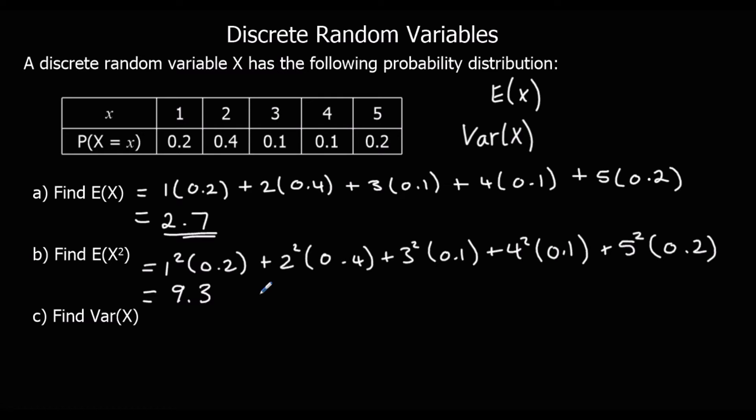And now, Var(X) is E(X squared) minus E(X) squared. So E(X squared), 9.3, minus E(X), 2.7 squared. So we can say that's E(X squared) minus E(X) squared. It's the square of the mean. Note, the mean of the squares minus the square of the mean, like variances when we're working with other numbers.